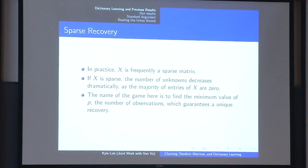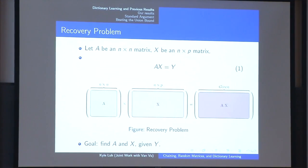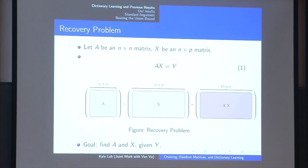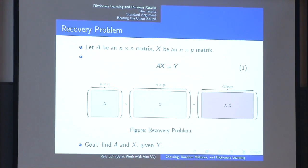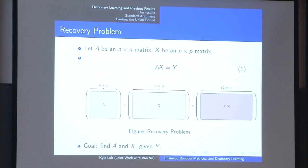Let me introduce some of the terminology in the field. A is generally referred to as the dictionary, and in particular the columns of A are the dictionary elements. X is known as the observation matrix. Each column of Y is a linear combination of the columns of A, and the corresponding column in X indicates the linear combination. So you can think of a column of X as an observation of a linear combination of signals, and since X is sparse, each column of Y is a linear combination of very few dictionary elements.